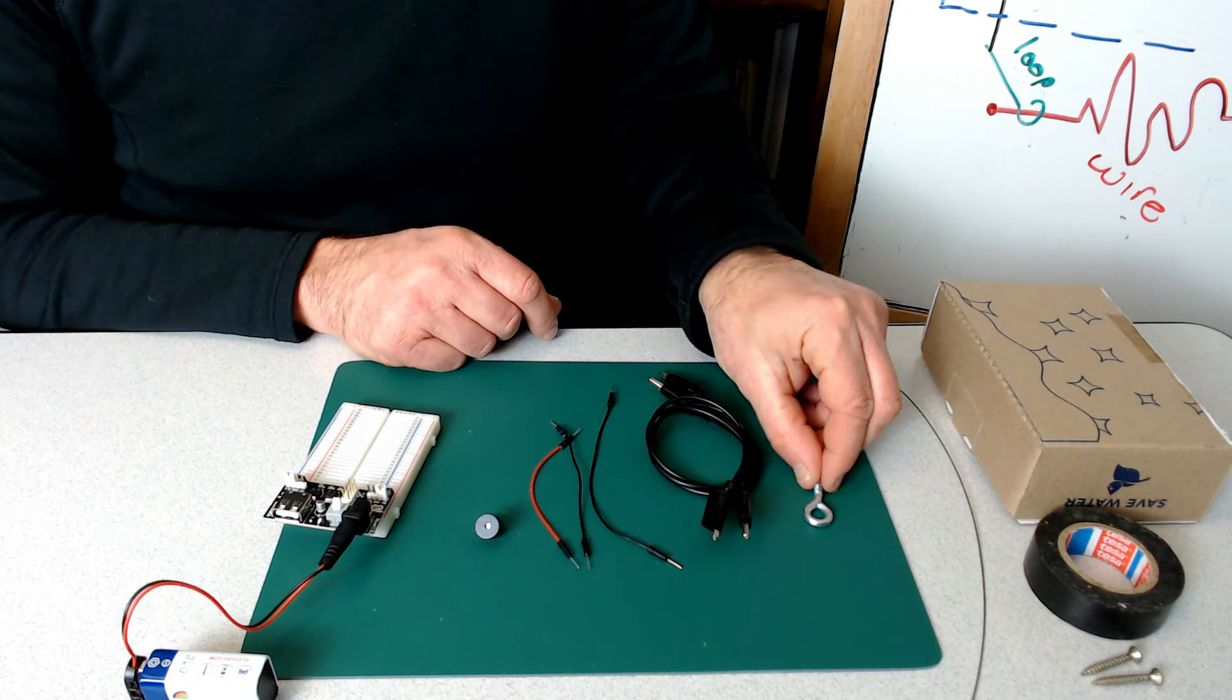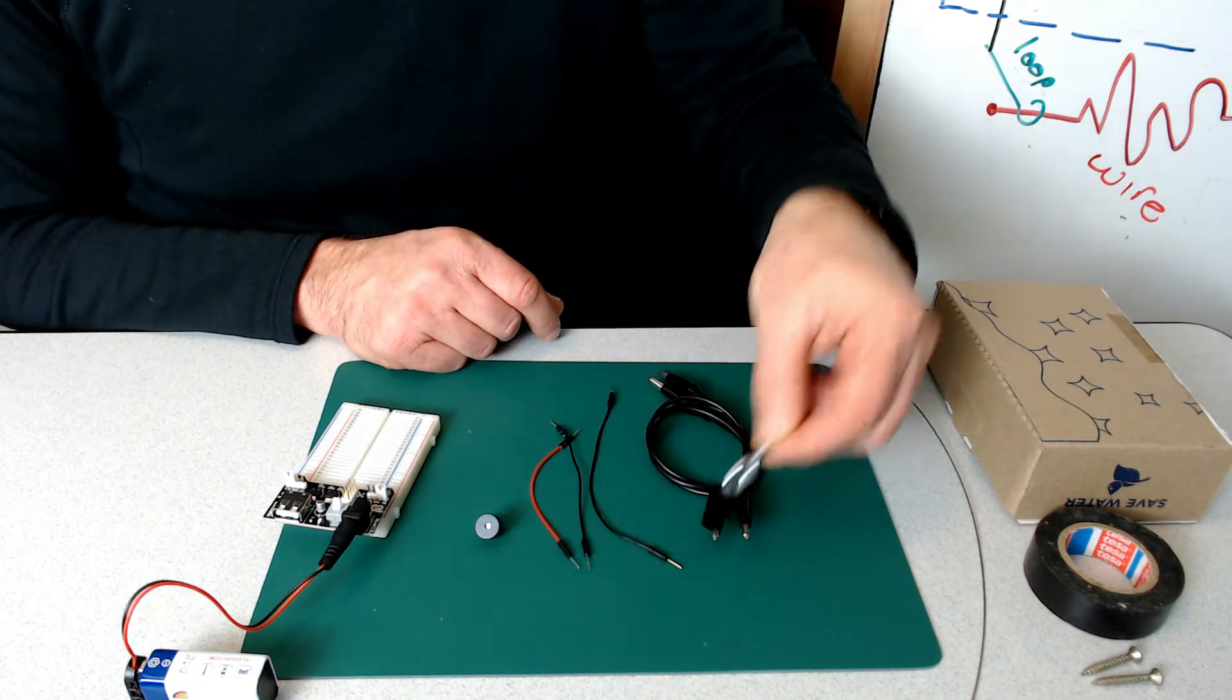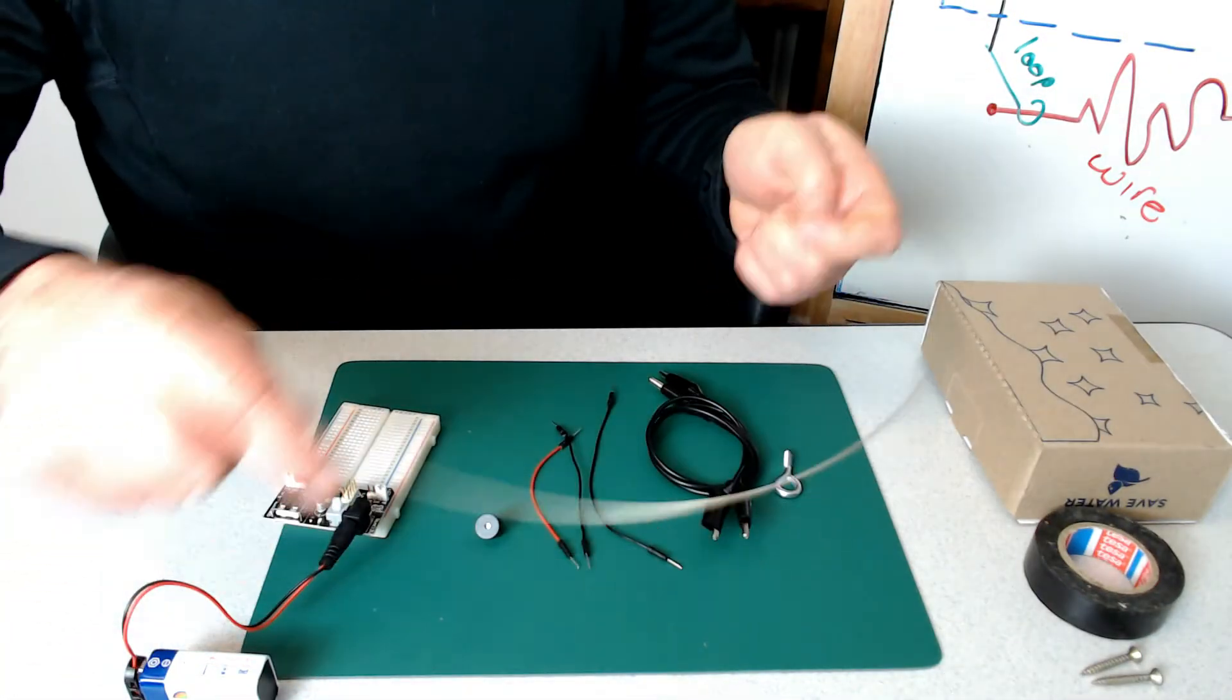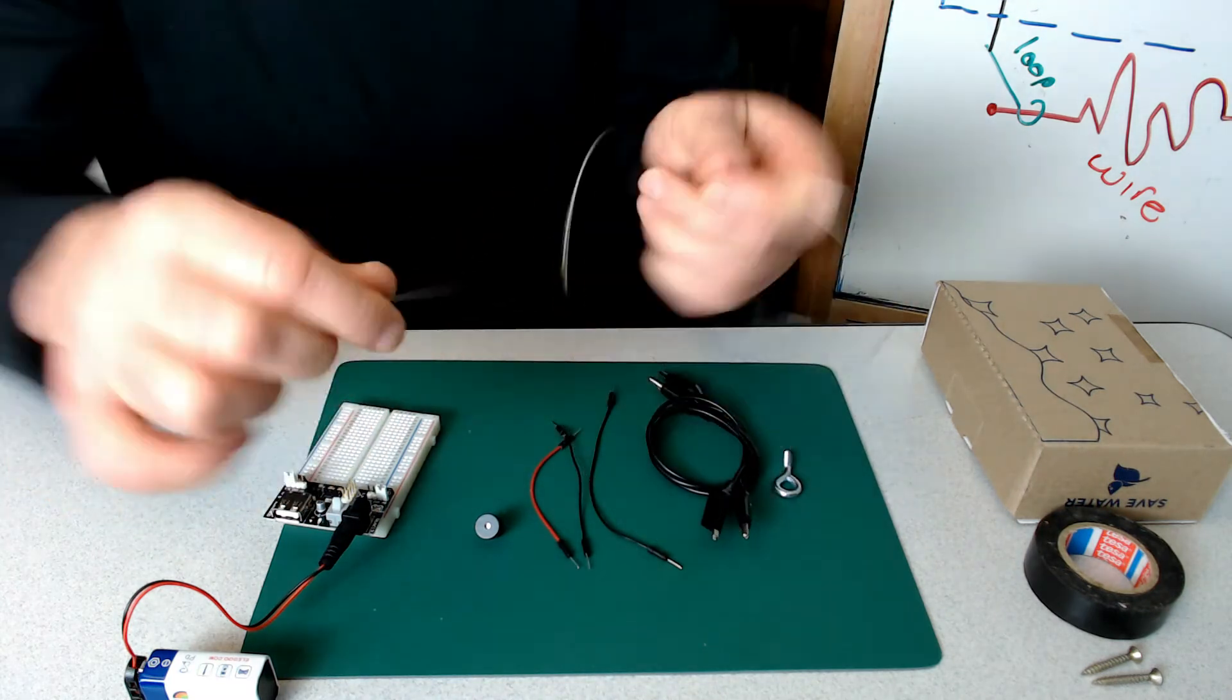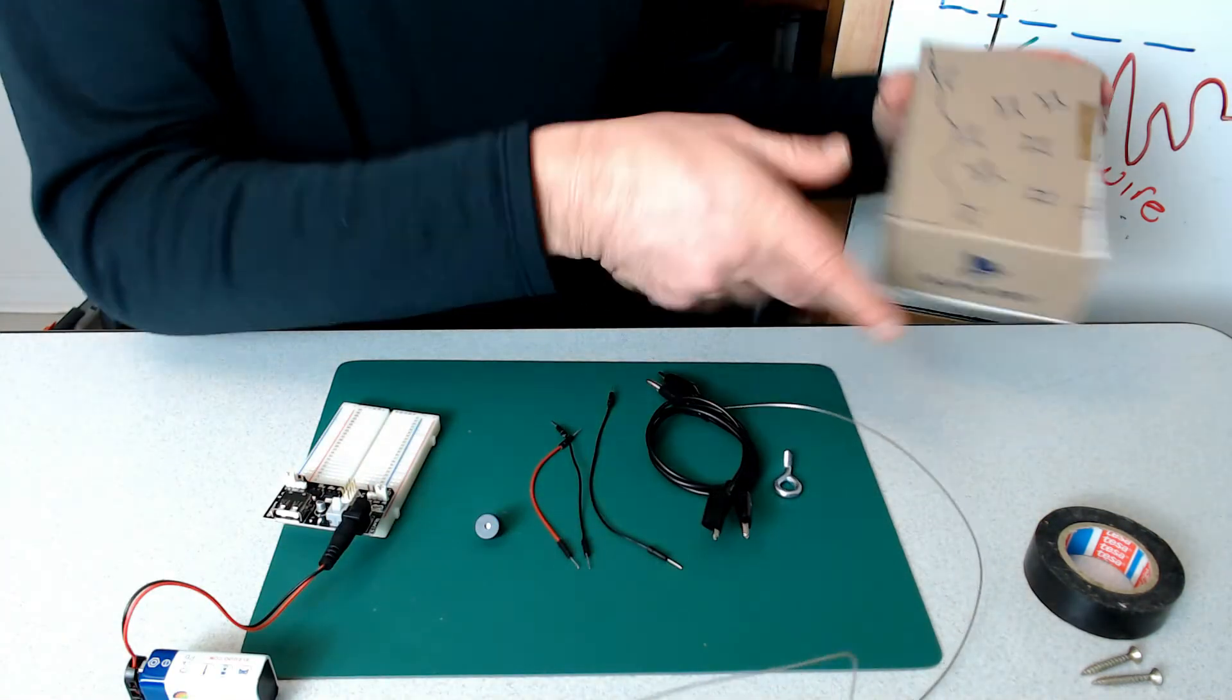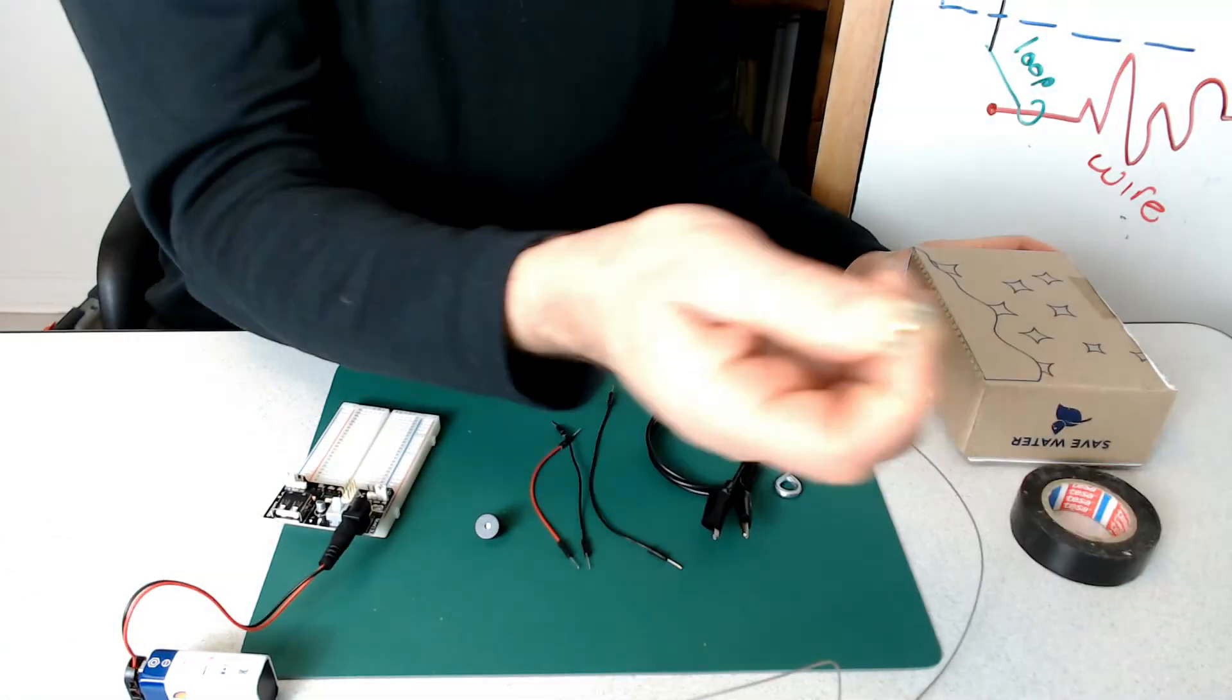Two alligator wires. A metal loop. We need a flexible wire. I'm using a wire that's often used for different arts and crafts which is very flexible. We need a box, tape, and two screws.